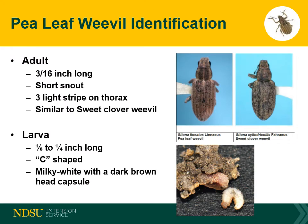For identification, the adult is a weevil about 3/16th of an inch long, slender, grayish brown with a broad snout and has three light stripes on the thorax. It's often confused with the sweet clover weevil, which is featured in the top picture on the right side. The sweet clover weevil does not have the three light stripes on the thorax. Larvae are legless and white with a dark brown head capsule, ranging from 1/8 inch to 1/4 inch long, and curl into a C shape when disturbed.